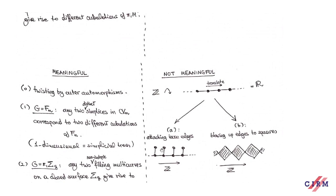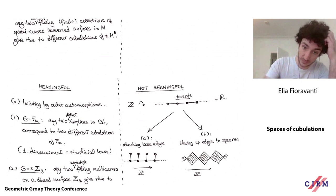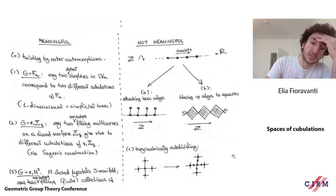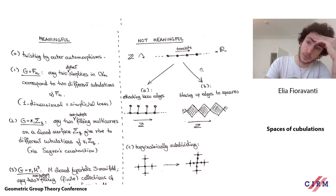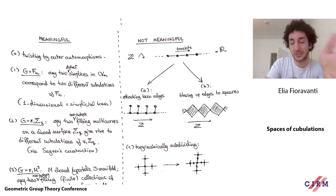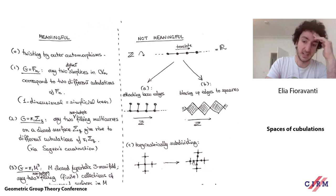Procedure A consists in attaching a loose edge to every vertex — just a loose edge sticking up and going nowhere. Procedure B consists in blowing up every edge to a square, so you get a chain of squares attached along diagonally opposite vertices. Z still translates, the actions are still proper and co-compact, but things are different from before. There's a third procedure, Procedure C, which is just barycentrically subdividing — I'm drawing it for a tree because in R it would change the metric; in one dimension we're just adding midpoints of edges as vertices.